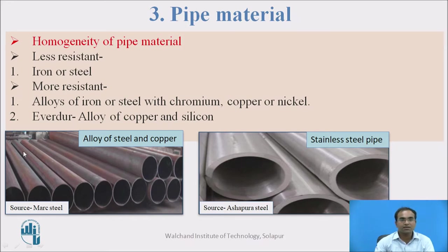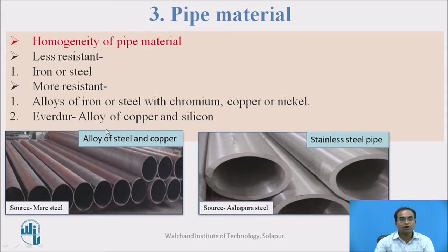Here is an example of steel — an alloy of steel and copper. You can see it is not rust; it is its natural color. And here is a stainless steel pipe, which is mostly a low-iron steel alloy. The alloy of steel and copper is mostly used in the conveying system, and stainless steel is mostly used in the distribution system.